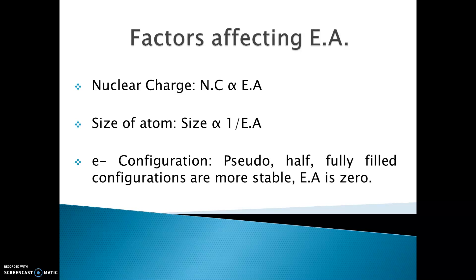Nuclear charge and electron affinity are directly proportional to each other. If nuclear charge increases, the size of an atom decreases and the force of attraction between the nucleus and the outermost electrons increases. So the addition of an electron into that atom becomes easier, meaning electron affinity increases.